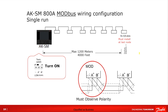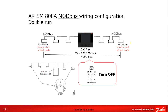Modbus wiring is essentially the same. Polarity must be observed — A and B from one device to the next. Termination: if the System Manager is at one end, that termination switch needs to be in the on position, and also at the device on the far end. Similarly, we can place the System Manager in the middle of the loop with termination off at the System Manager and resistors at either end — one way to combine two communication loops into one.